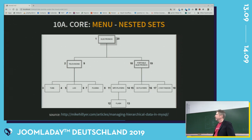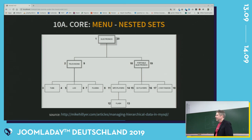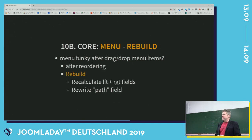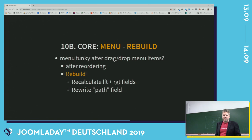If you add a new child, you have to recalculate all the values. The new child will become LFT=4, RGT=5, and the parent's RGT will become 6. This is a nice way to structure data, and it's not only menus that use this — the categories, the tags, and I think also ACL uses it. So if you have your menu failing, maybe because you tried to drag and drop and it doesn't work, or you have some weird errors on the front end, the best thing you could do is rebuild. When you rebuild the menu, the LFT and RGT fields are recalculated. There is also a field called 'path' where the whole path of the item will be written out.